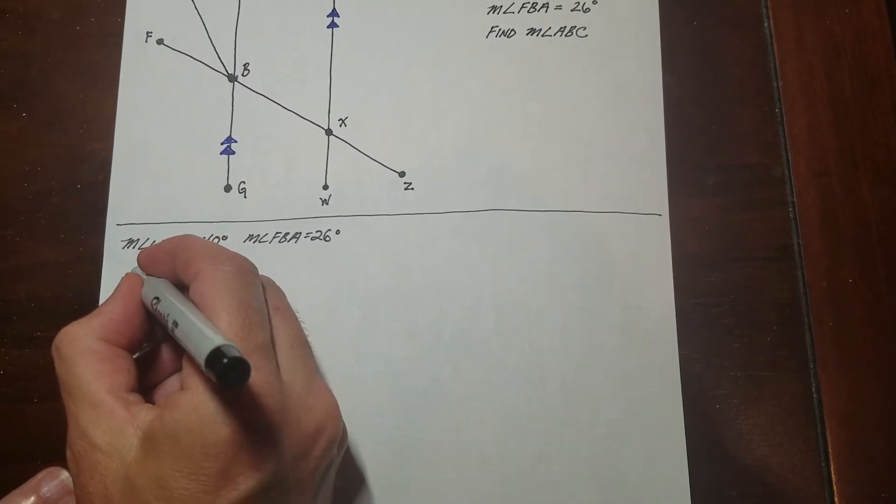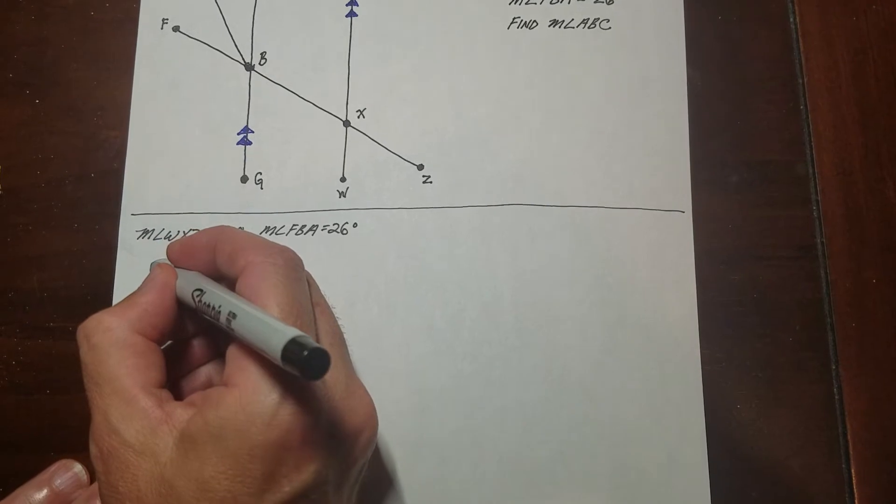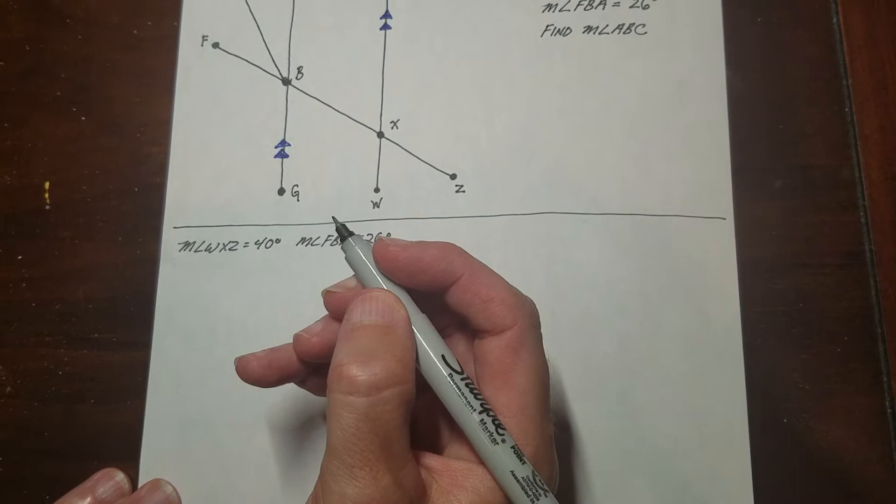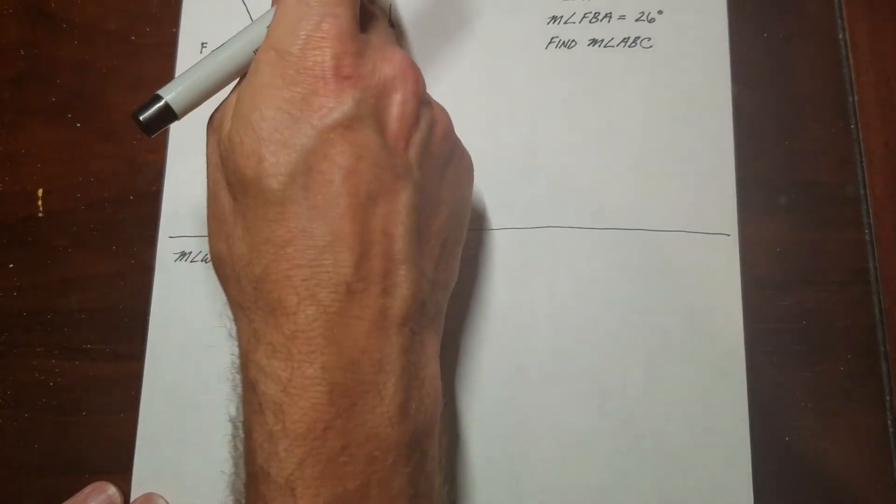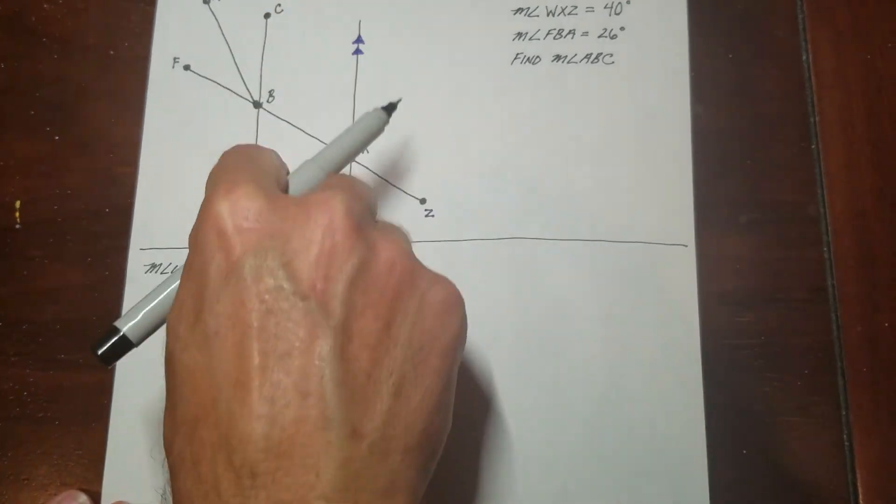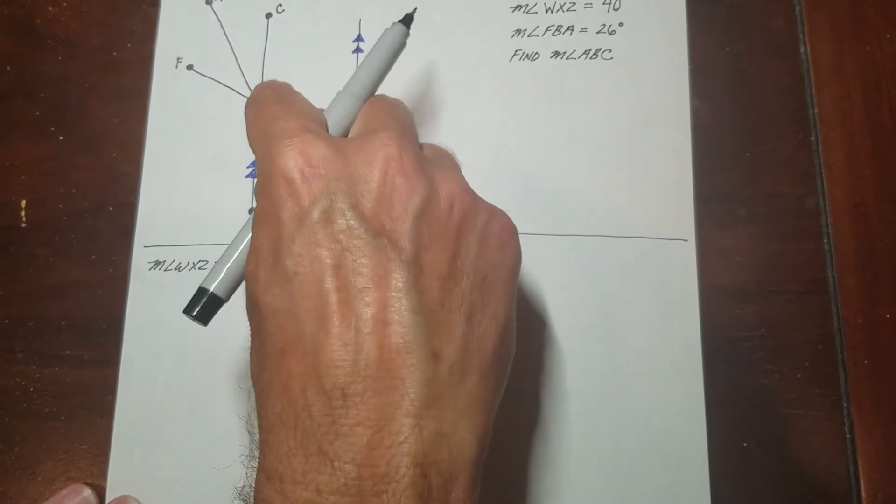There's a couple of ways to do it. Probably the easiest way is to call this a line. So I get a lot of questions on this, like how do I write it? Is it a segment? Is it a line? You should write it as a line. It just makes it a lot easier.